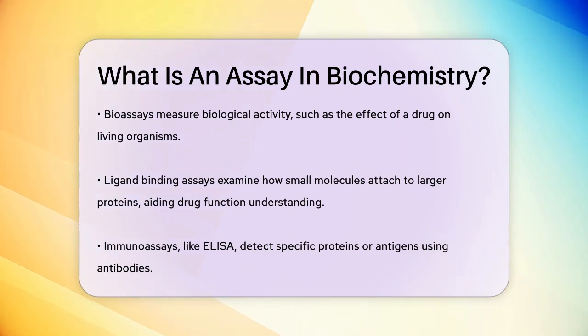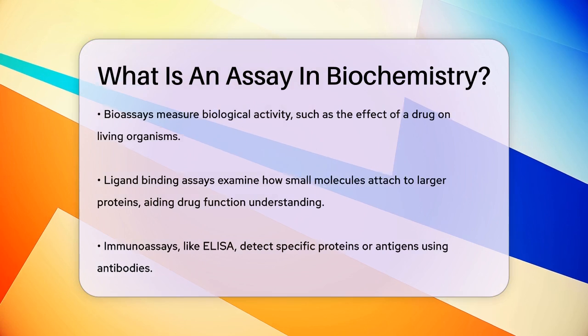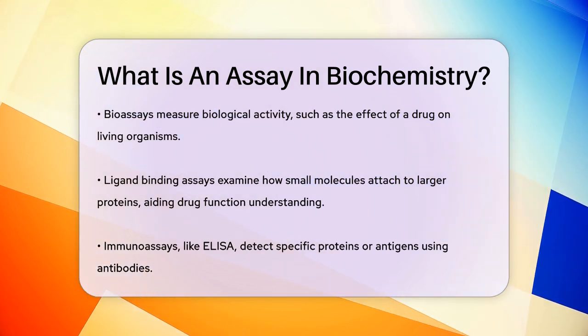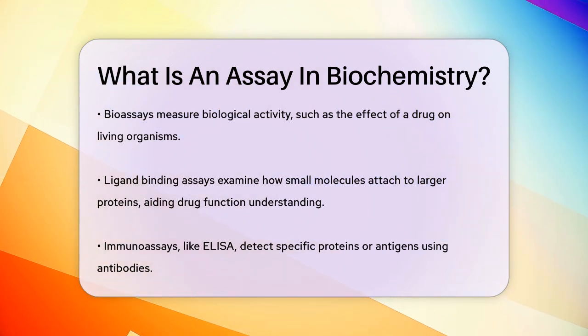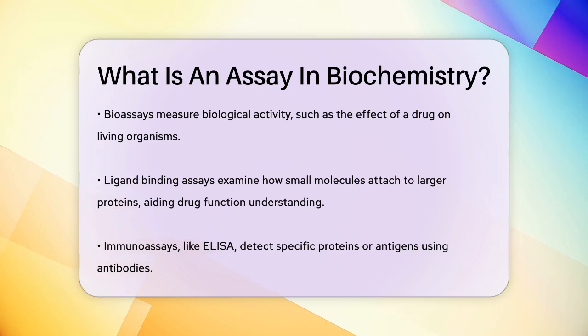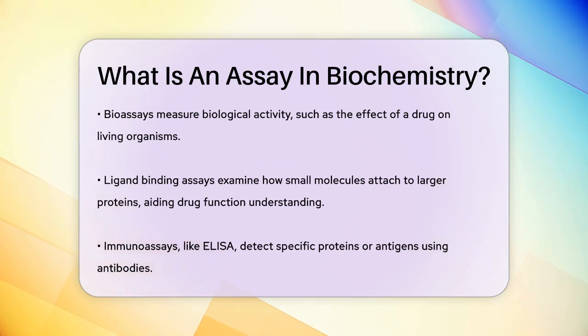Immunoassays, like ELISA — enzyme-linked immunosorbent assay — detect specific proteins or antigens in a sample by using antibodies. In high-throughput screening, or HTS, assays are designed to test many samples quickly.